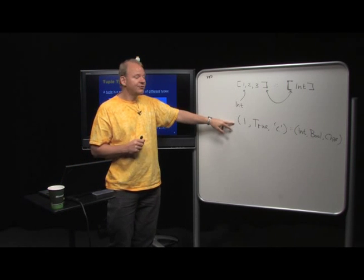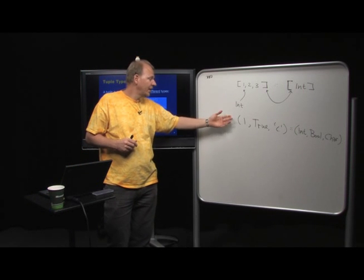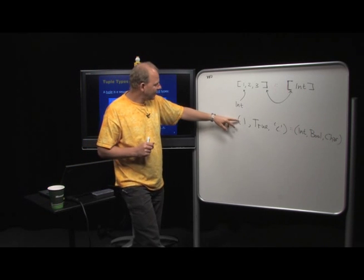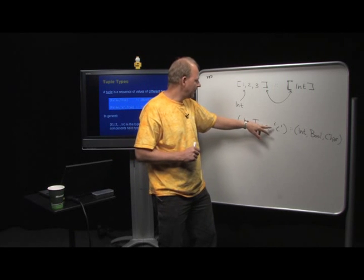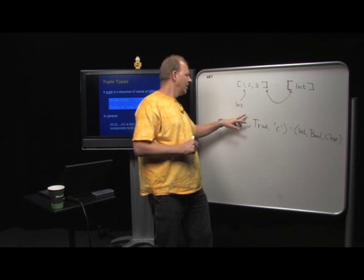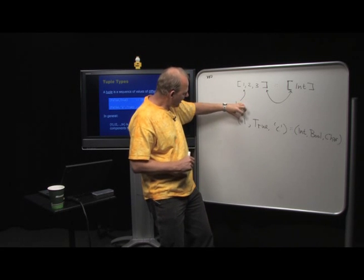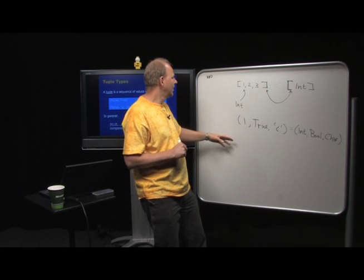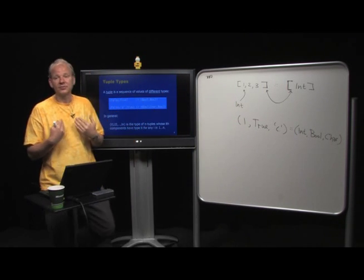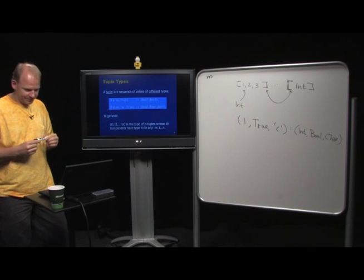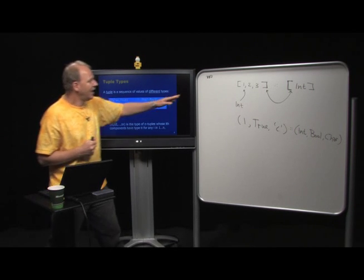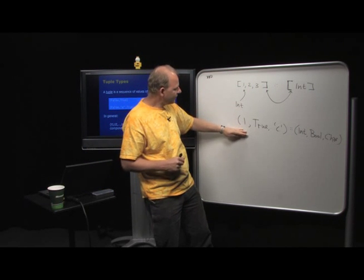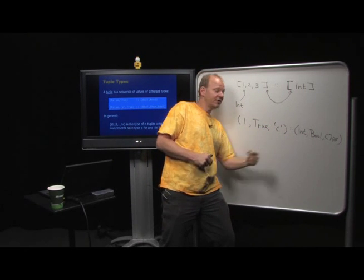One way to look at a tuple is as a heterogeneous list of a specific length. When you grab an element of a tuple, you do it by position or by pattern matching. This is a type we don't really see in many object-oriented languages. Just like with lists, the structure of the tuple and the structure of its type look very similar — you just replace each value with its type.